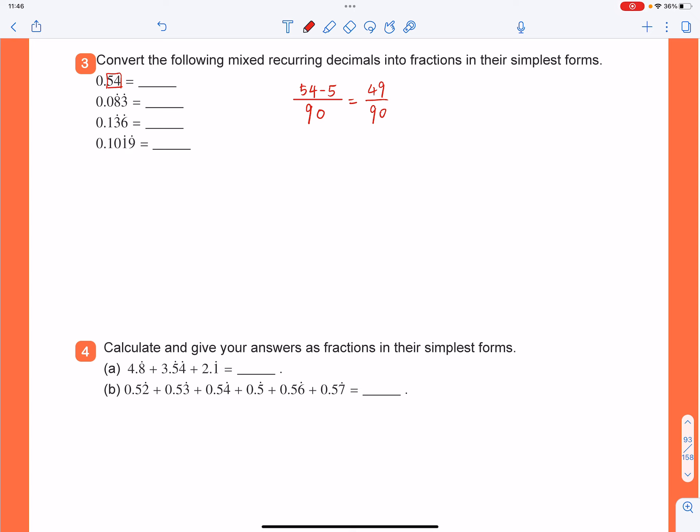And that's the answer to the first question. And then the second one, it's going to be 0.083 with 8, 3 recurring. So you will have that.